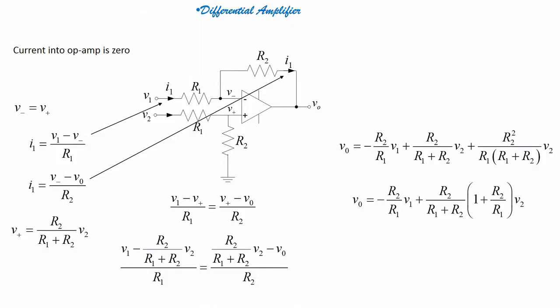If I have an op-amp in the following configuration or following circuit, what I see is I am applying input to the inverting as well as non-inverting terminal of the amplifier. I have values R1 and R2. In this particular configuration, how can I find my output voltage Vo?